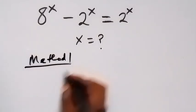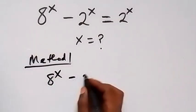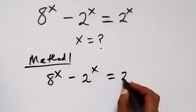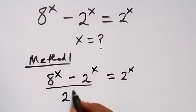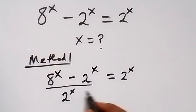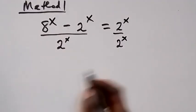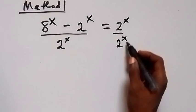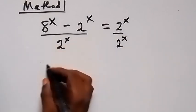In method one, we have 8 raised to power x minus 2 raised to power x equals 2 raised to power x. From here, let's divide both sides by 2 raised to power x. Now 2 raised to power x over 2 raised to power x will cancel each other to give 1.